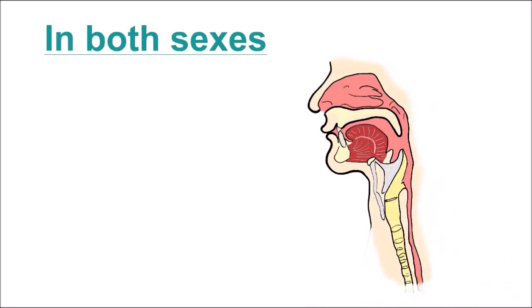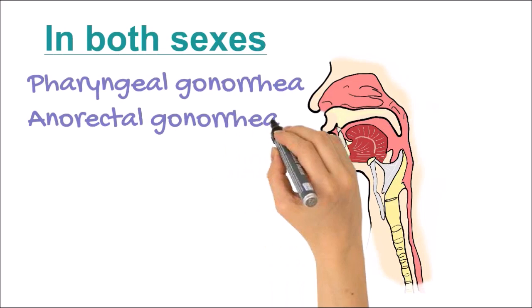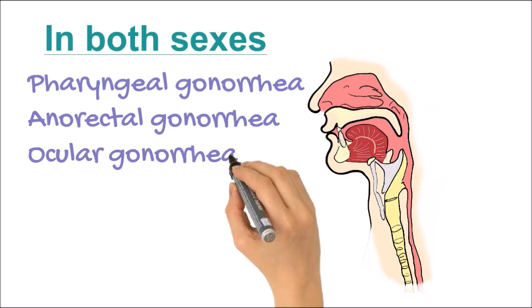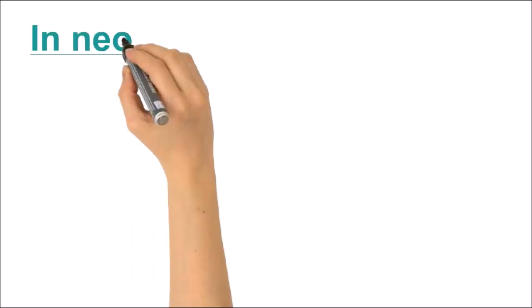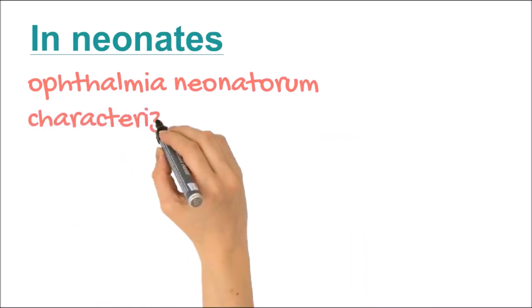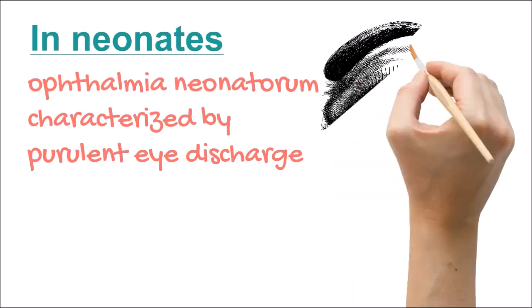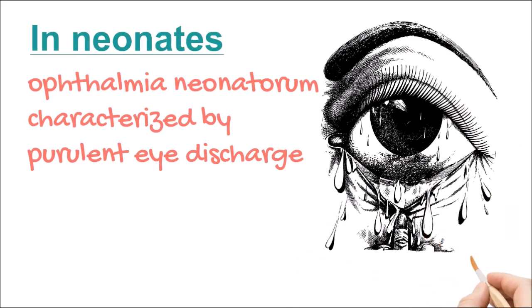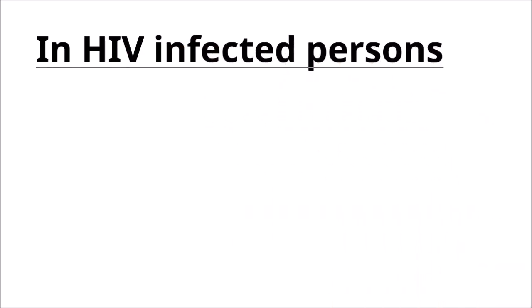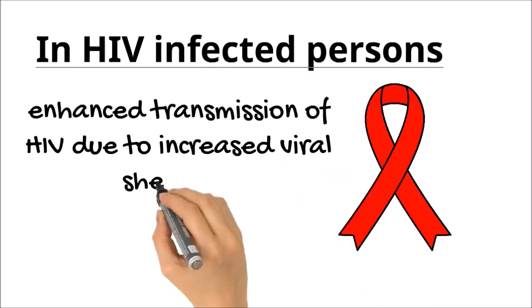In both sexes, it can cause anorectal gonorrhea spread by anal sex, and pharyngeal gonorrhea spread by orogenital sex. It can also cause ocular gonorrhea, or infection of the gonococcus in the eyes. In neonates, it can cause ophthalmia neonatorum, a very severe complication characterized by purulent eye discharge within 2-5 days of birth, with transmission occurring during birth from colonized maternal genital flora. In HIV-infected persons, it can also cause enhanced transmission of HIV due to increased viral shedding.